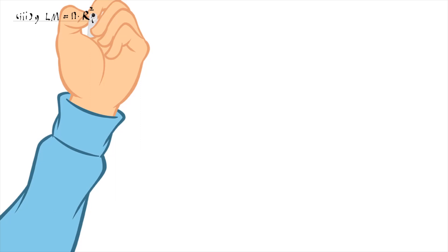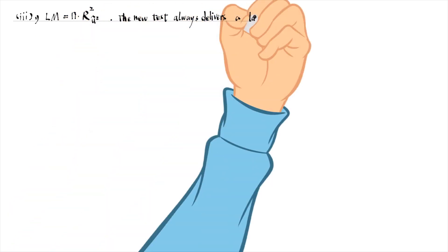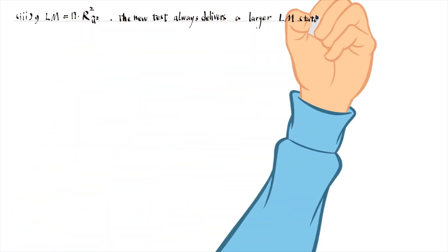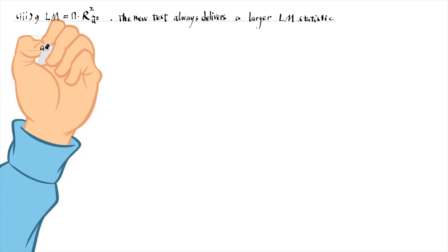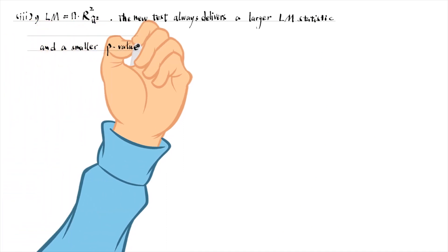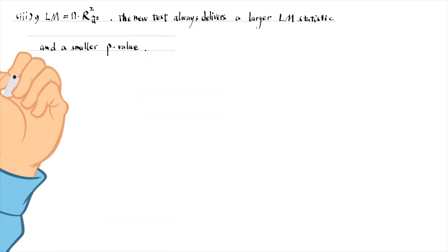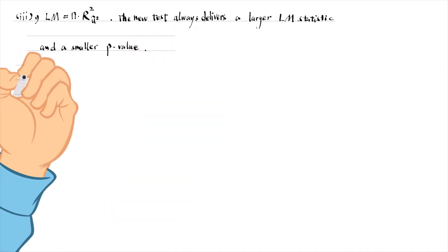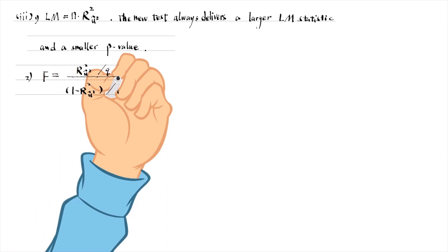For part 3, if we use the LM statistic, the new test always delivers a larger LM statistic and a smaller p-value. But using the F statistic makes it uncertain which p-value is smaller.